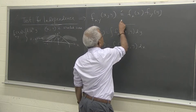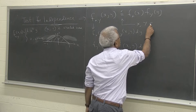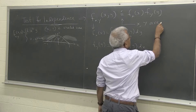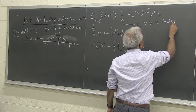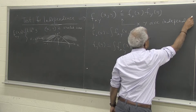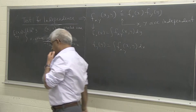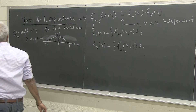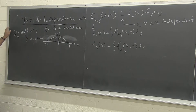If this relationship is true, then X and Y are independent. Let us check this on an example.